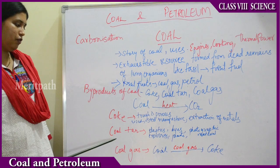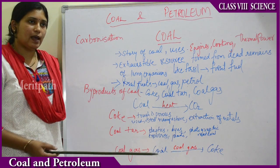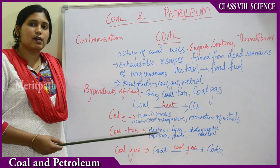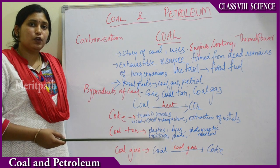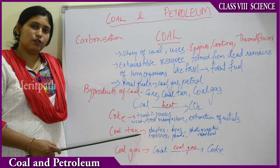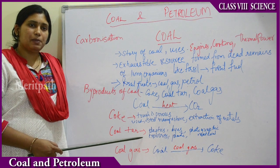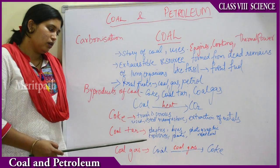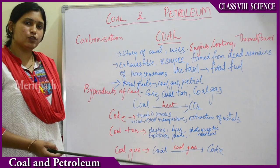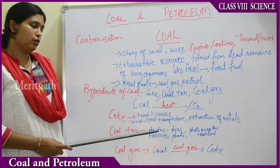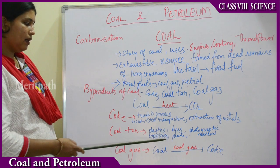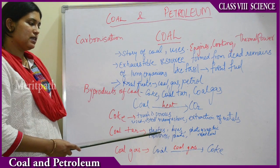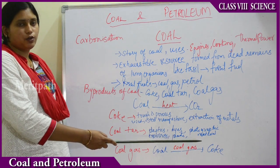The next byproduct of coal is coal tar, also known locally as damper, used for laying roads. Coal tar is a mixture of about 200 products. It is blackish in colour, a very thick liquid with an unpleasant smell. The uses of coal tar include laying roads, and also making plastics, dyes, explosives, paints, and photographic materials.